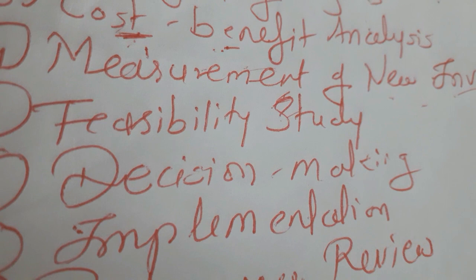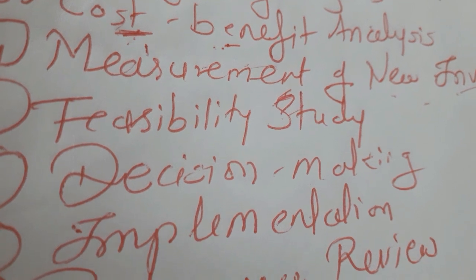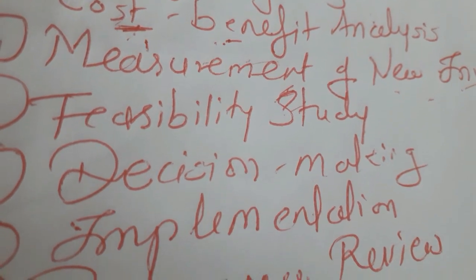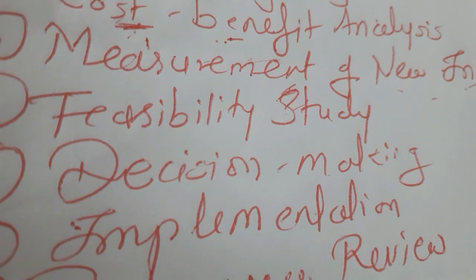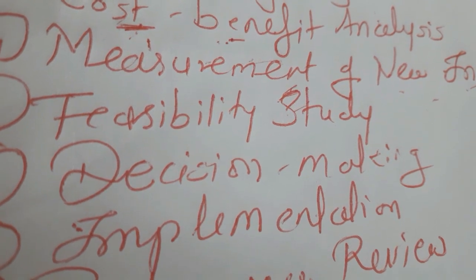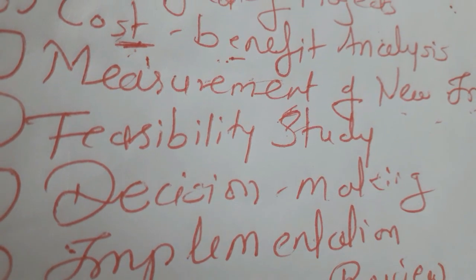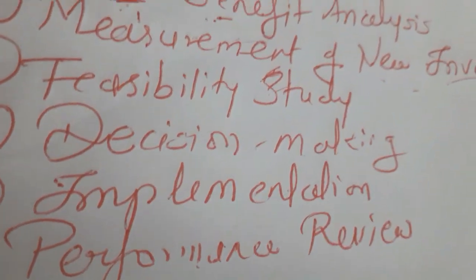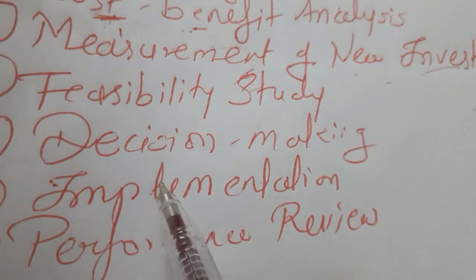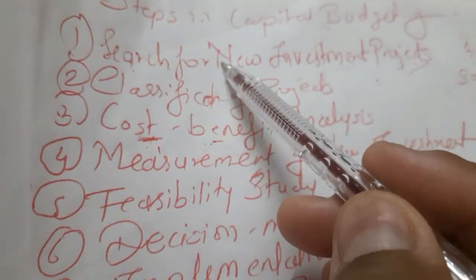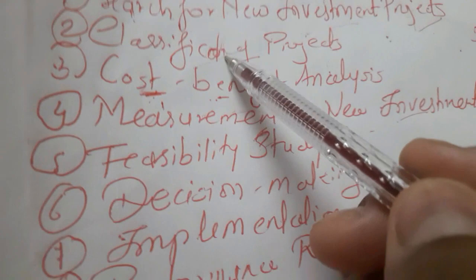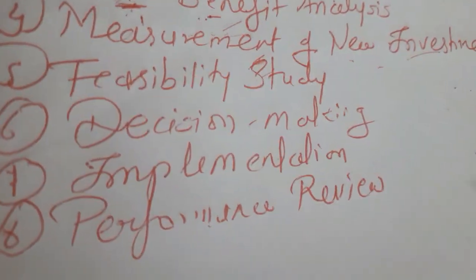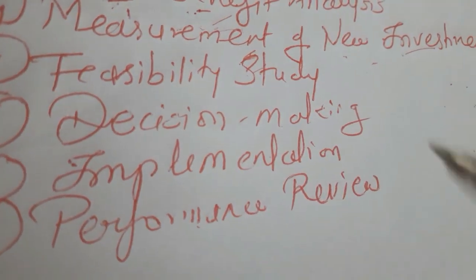The fifth step is decision making. A decision about the project has to be taken and executed with the directors. Selection of the suitable project for your investment is more important. After you have searched, classified, done cost-benefit analysis, and assessed feasibility, you take a decision on whether you want to invest in that particular project or not.